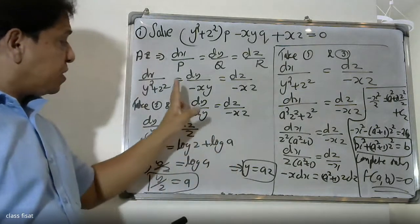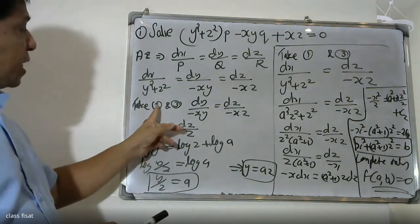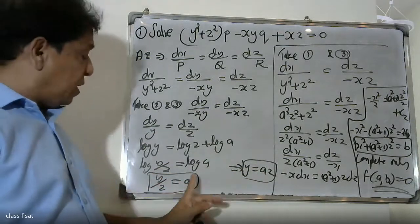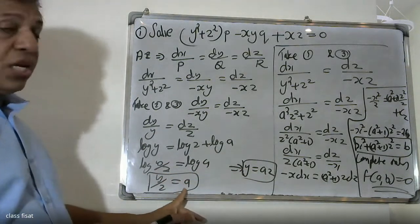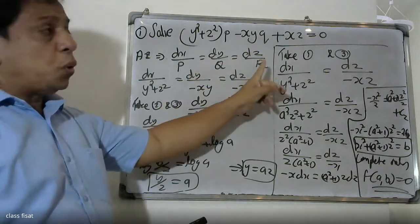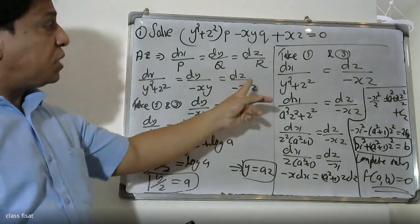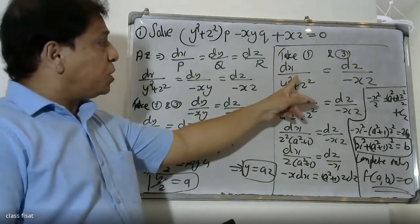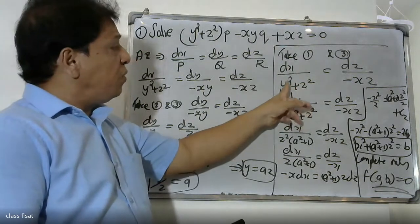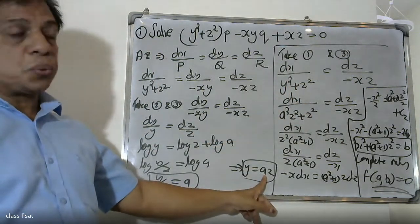In summary, we used two methods with the first ratio, second ratio, and third ratio. From the second and third ratios we got y by z equals a. Then taking the first and third ratios, dx by y squared plus s squared is worked through to give the second constant.